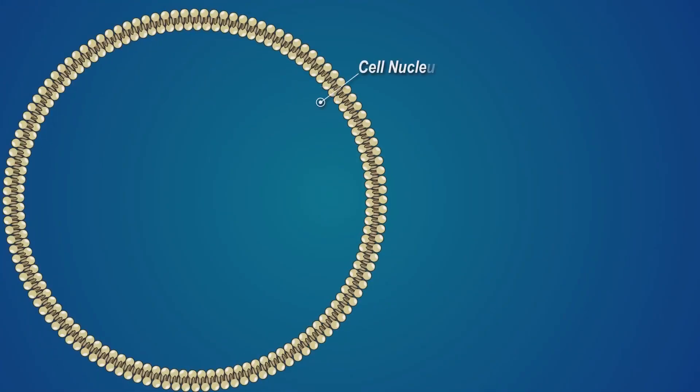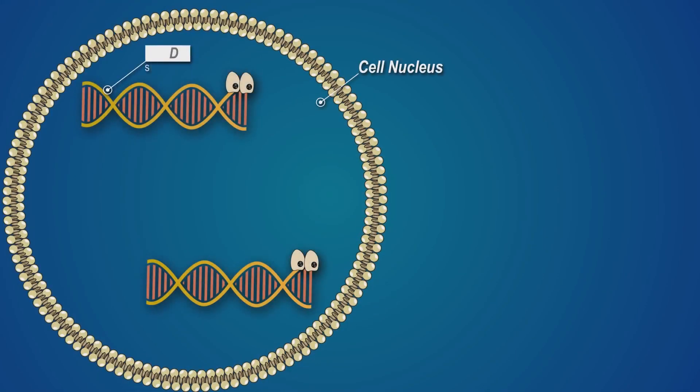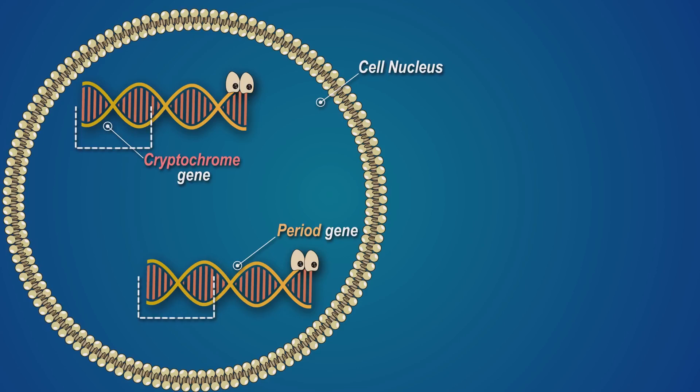Here we have a cell's nucleus and inside there is DNA storing all the information about the body. Let's look at two particular genes called period and cryptochrome. These genes have something like parking spots for proteins situated on their DNA called e-boxes.